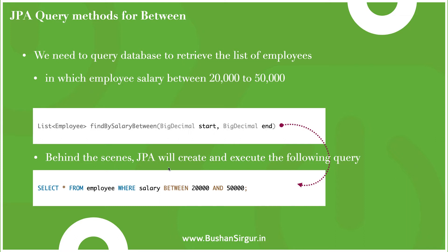Behind the scenes, JPA will create and execute the SQL query: SELECT * FROM employee WHERE salary BETWEEN 20000 AND 50000. Based on this, it will retrieve the list of employees.